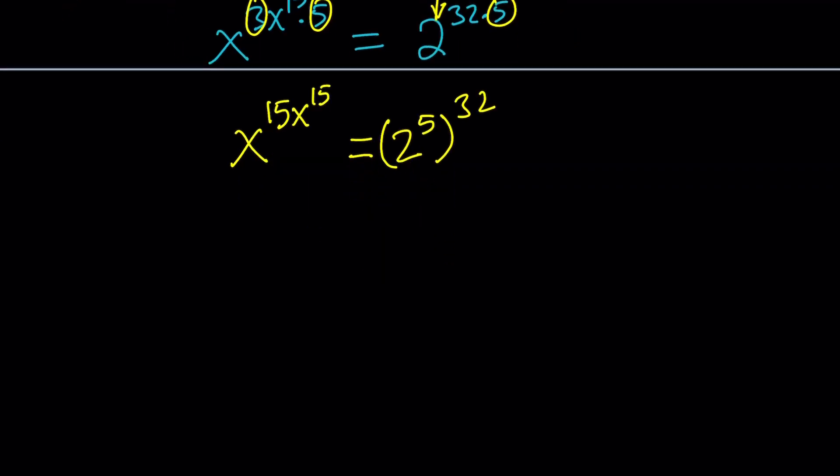Awesome. So, right-hand side can be written as 32 to the power 32, which is nice. The left-hand side, we're going to go ahead and put this inside. Meaning that we're going to do the opposite of multiplication of exponents. So, in other words, we're going to write this as x to the power 15 to the power x to the power 15, because exponents are multiplied.